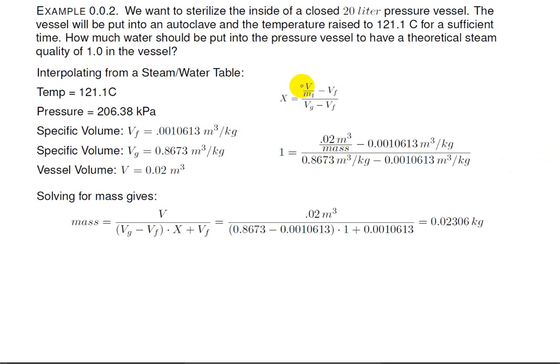So, what we're going to do is solve this equation for mass, M sub t, and we get mass to be volume of the can over specific volume of the gas minus specific volume of the fluid times our fraction, which is 1, if you'll recall, plus the fluid specific volume. So, that's going to be 0.02 cubic meters over VG minus VF times 1 plus VF, and that gave me 0.02306 kilograms, which is only 23 milliliters in that 20 liter vessel.